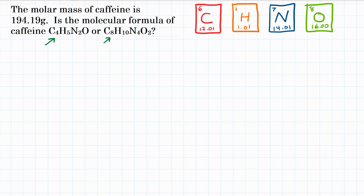We only have one other option: C8H10N4O2. So which of those is correct — is it the empirical formula, or is it some multiple of that?